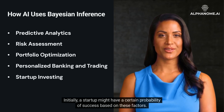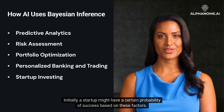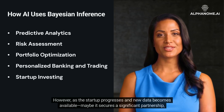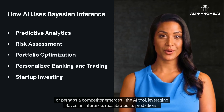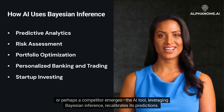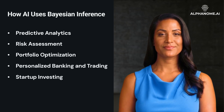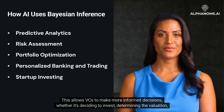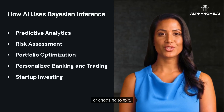Initially, a startup might have a certain probability of success based on these factors. However, as the startup progresses and new data becomes available — maybe it secures a significant partnership, or perhaps a competitor emerges — the AI tool, leveraging Bayesian inference, recalibrates its predictions. This allows VCs to make more informed decisions, whether it's deciding to invest, determining the valuation, or choosing to exit.